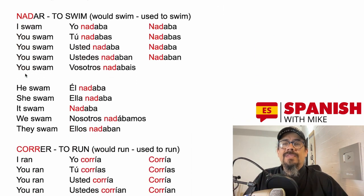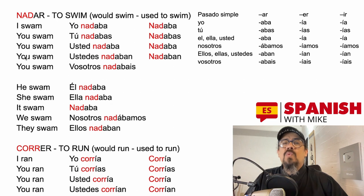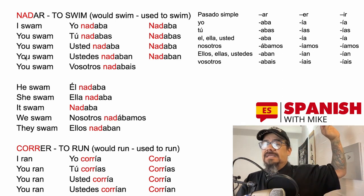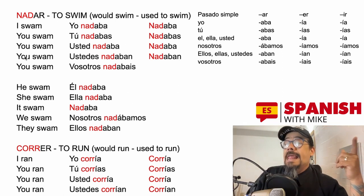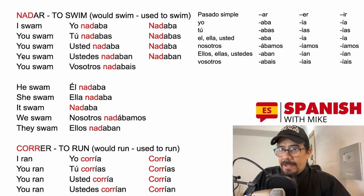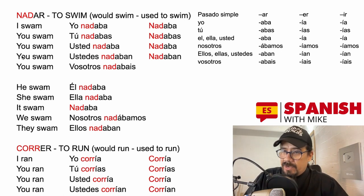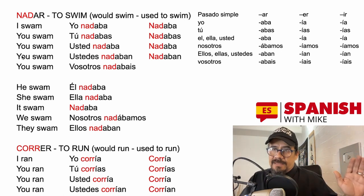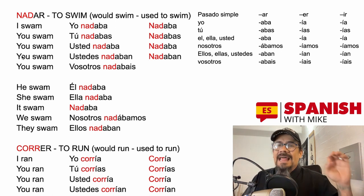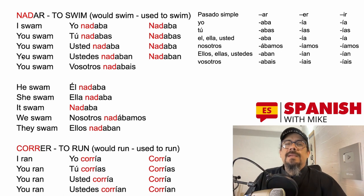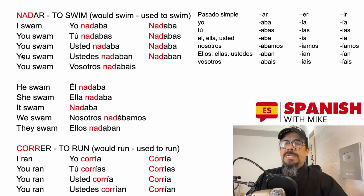For the pretérito imperfecto, starting with nadar — first column. I would swim (back in the days) = yo nadaba. You swam = tú nadabas (informal). Usted nadaba (formal). Ustedes nadaban (plural). Vosotros nadabais, if in Spain. Remember we can skip the subject. He swam = él nadaba. She swam = ella nadaba. It swam = nadaba. We swam = nosotros nadábamos. They swam = ellos nadaban.